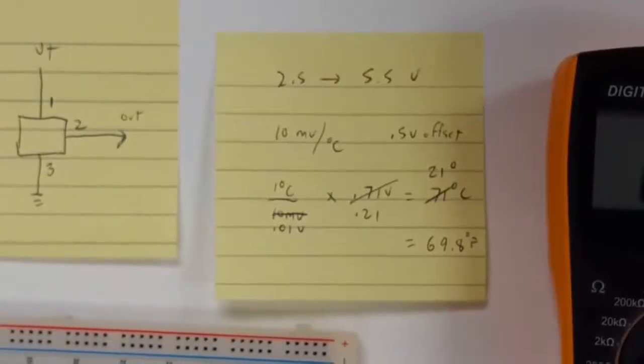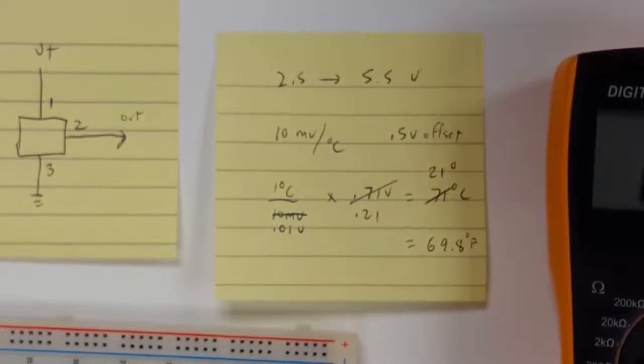Be careful when using this because when you do the math initially, knowing that this has a 10 millivolt per degree centigrade change, if you do the math, you come up with a really high temperature reading, abnormally high.